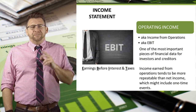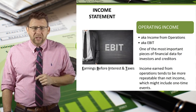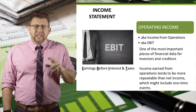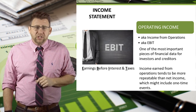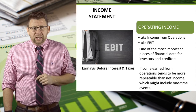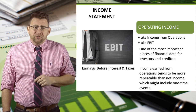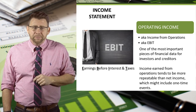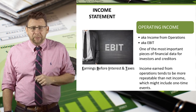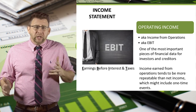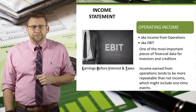Operating income has a few different names. It is also known as income from operations or EBIT, which stands for earnings before interest and taxes. When we look back at the multi-step income statement, you'll see that about the only things that remain after operating income are interest and taxes.